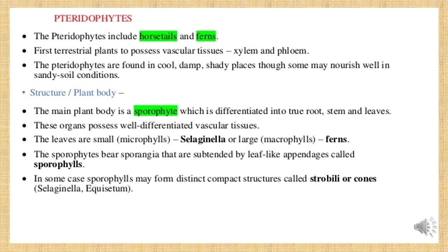Ferns are called ornamental plants. The sporophytes bear the sporangia — a sac-like structure that contains millions of spores. The sporangia are present on the sporophyll, which is a leaf that bears the spores. In some plants, these sporophylls form a compact structure called strobili or cones — a group of sporophylls combined together, resembling a cone. Examples include Selaginella and Equisetum.